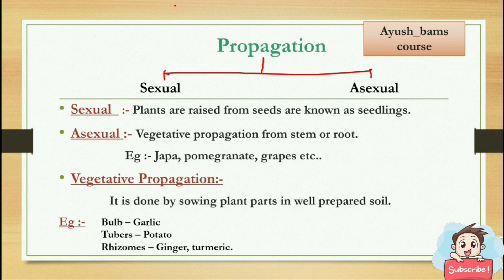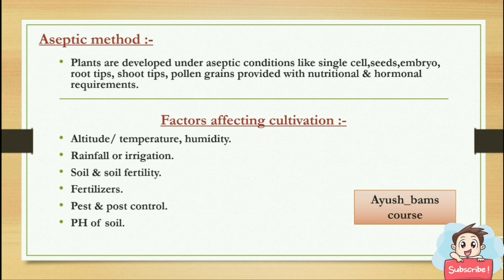Propagation is in two ways: sexual and asexual. Sexual — plants are raised from seeds, also known as seedlings. Asexual — vegetative propagation from stem or root, for example, Java plum, pomegranate, grapes, etc. Vegetative propagation is done by swapping plant parts in well-prepared soil — for example, garlic gives rise to bulbs, potato arises from tubers, ginger and turmeric arise from rhizomes. Aseptic method — plants are developed under aseptic conditions like single cell, seeds, embryo, root, ribs, etc.